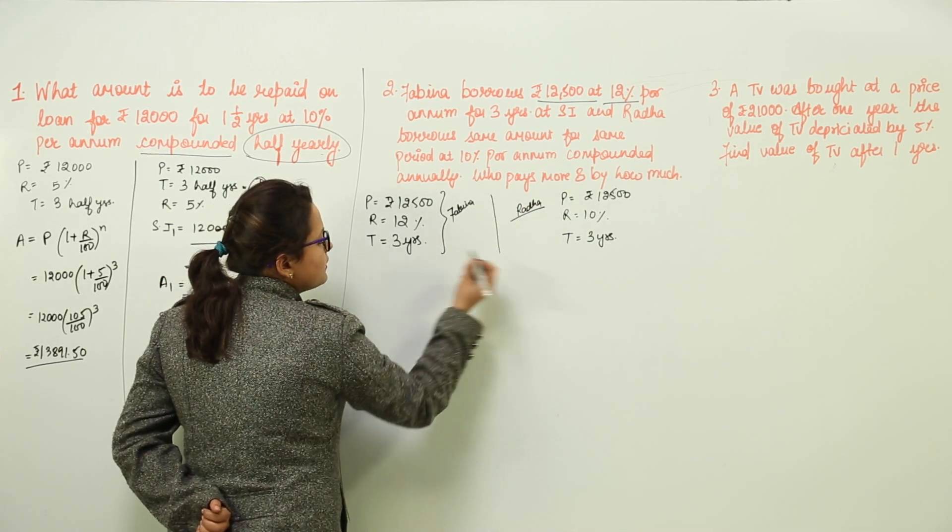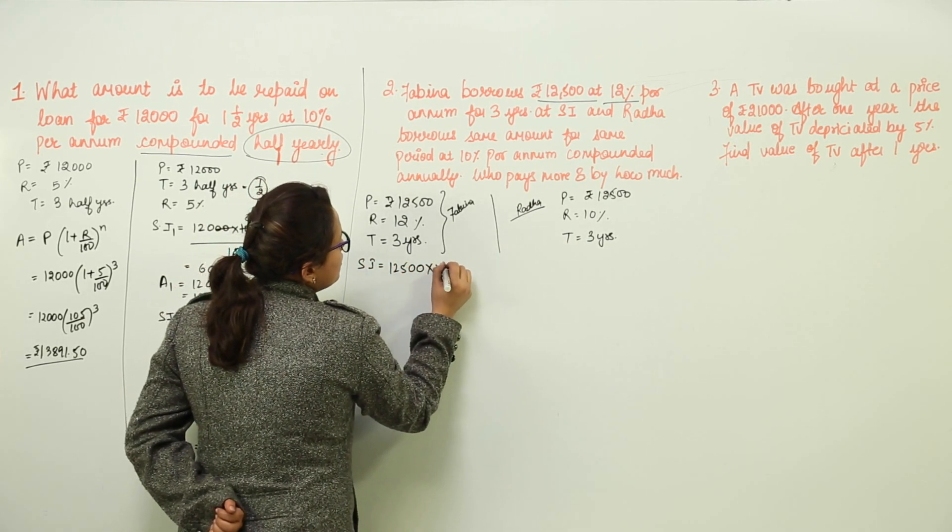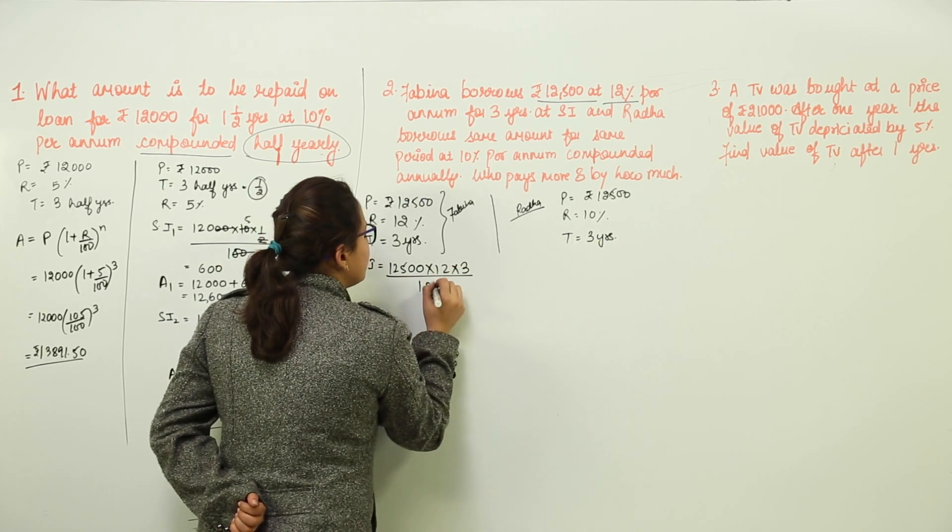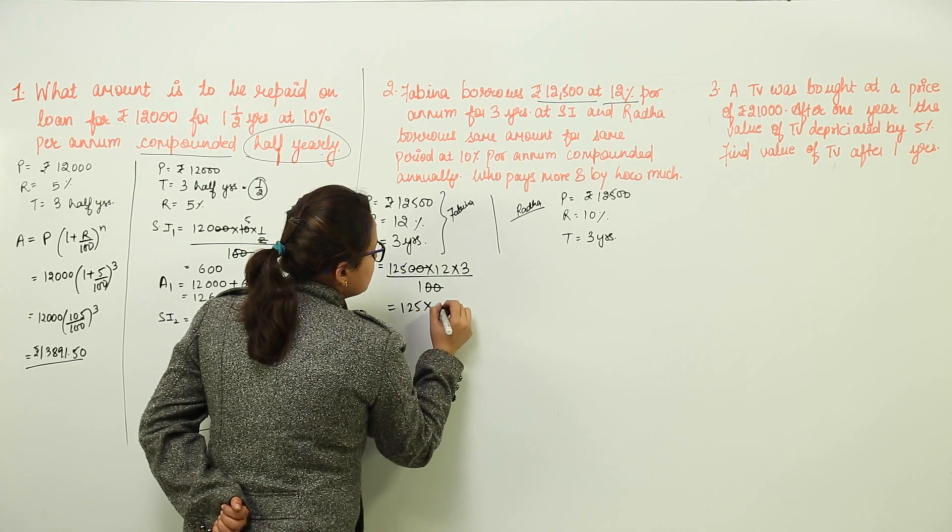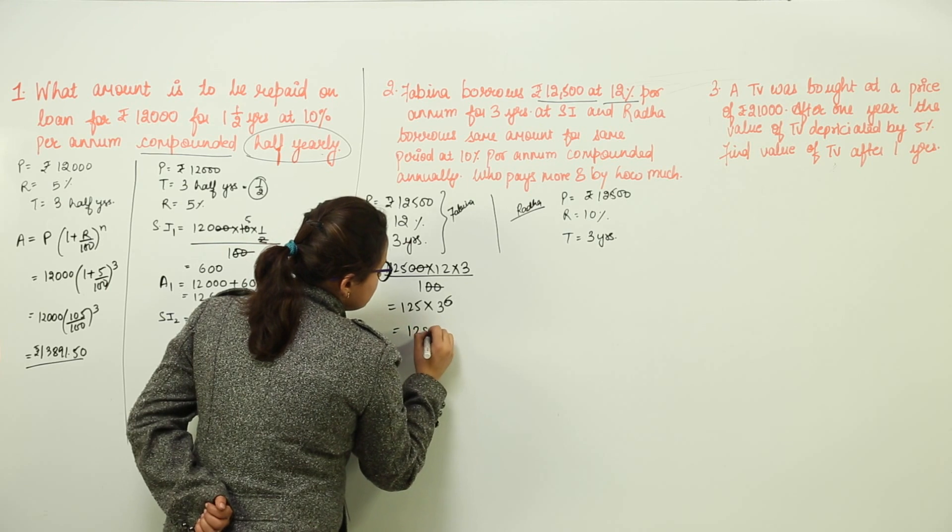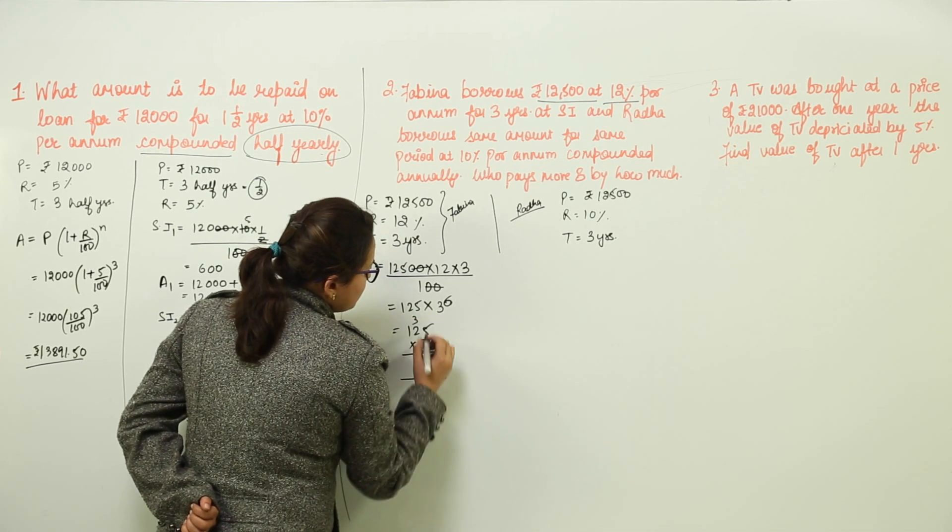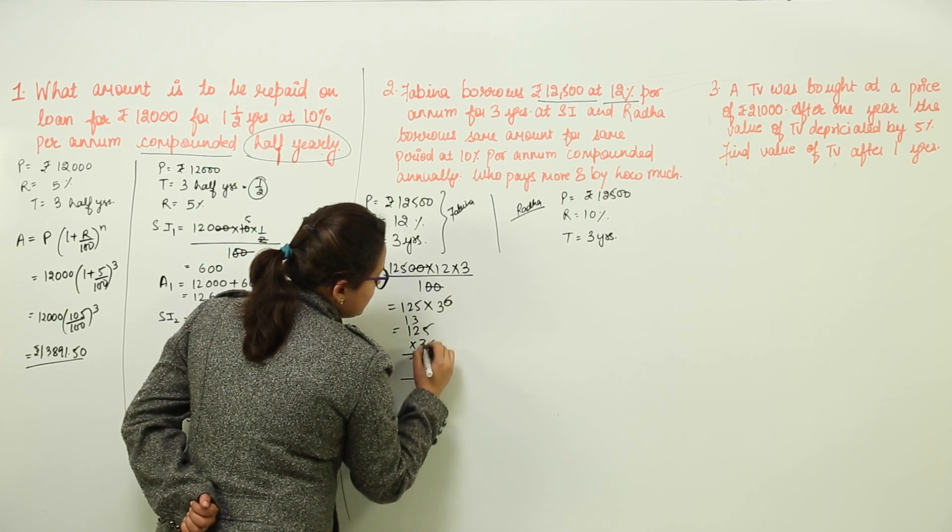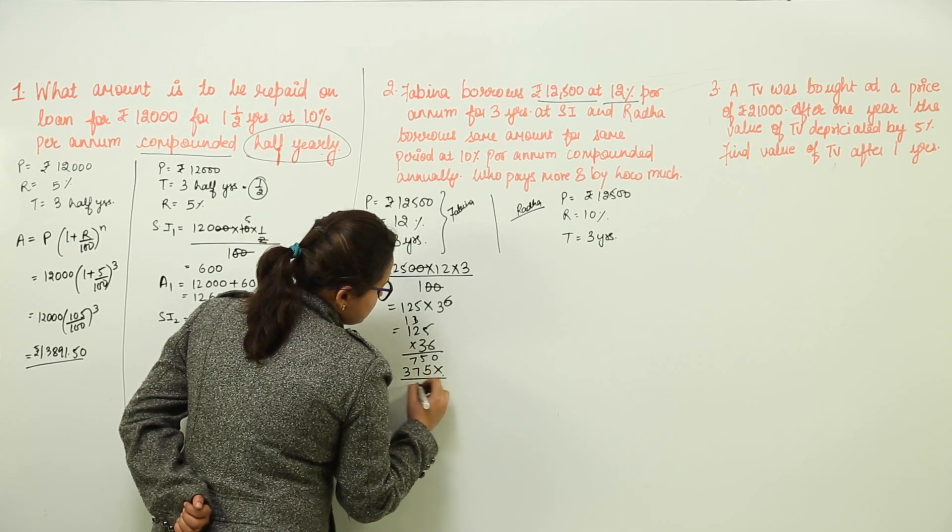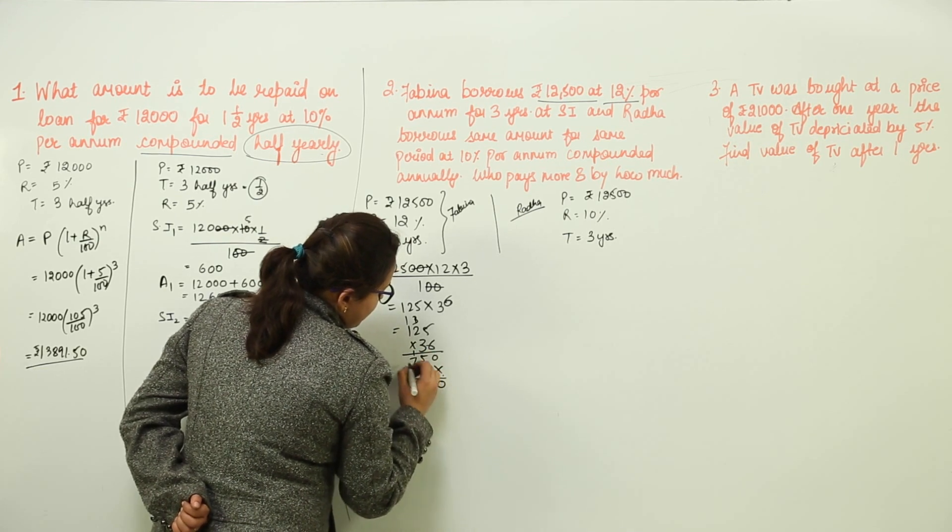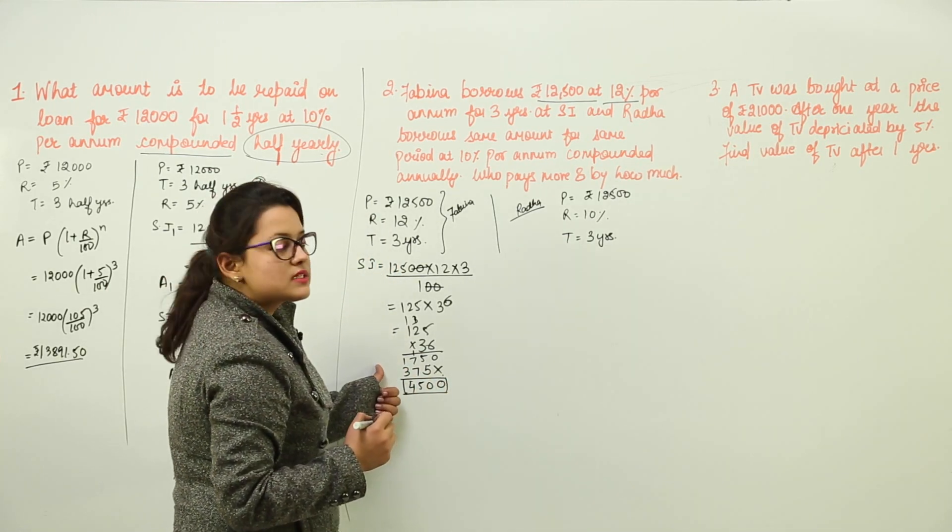Let us start calculating. Over here, we have to calculate simple interest. Simple interest would be equal to 12,500 into 12 into 3 over 100. On solving, we get 125 into 36. This gives us 4,500 as the simple interest that Fabina is getting.